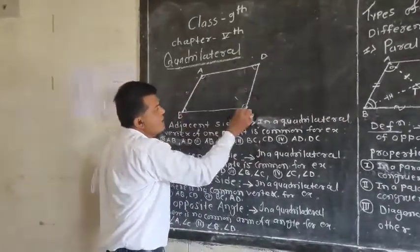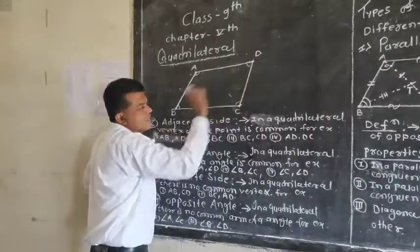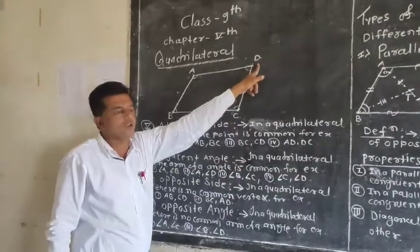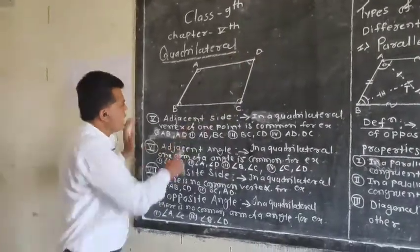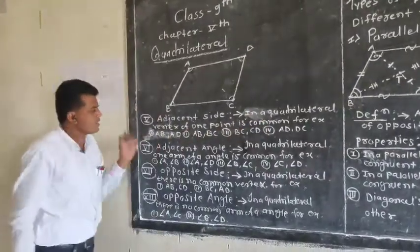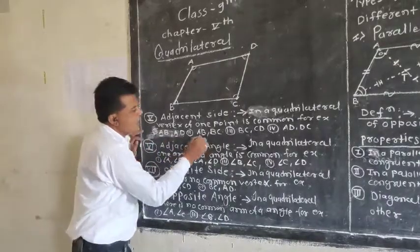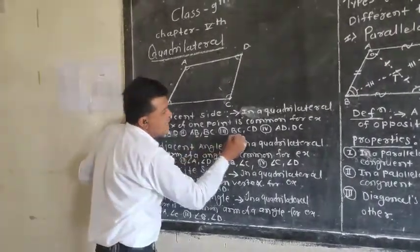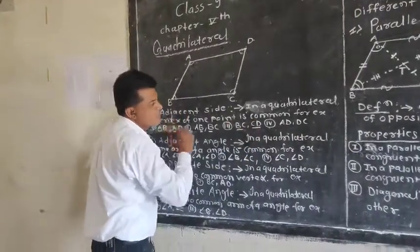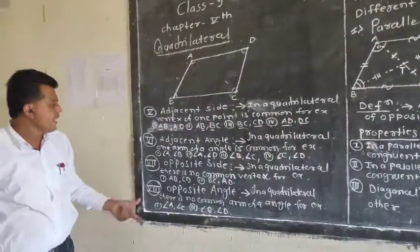For example, AB and BC are adjacent sides because B is the common vertex. BC and CD are adjacent sides because C is the common vertex. AD and DC are adjacent sides because D is the common vertex. In summary, adjacent sides in a quadrilateral share one common vertex.